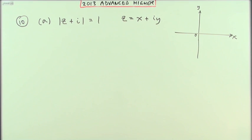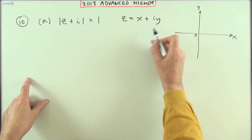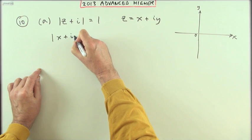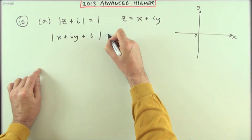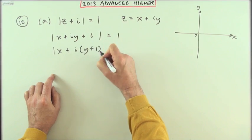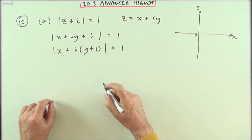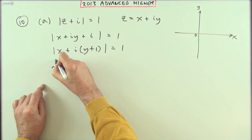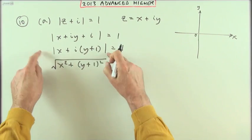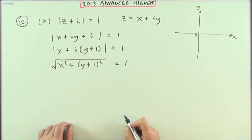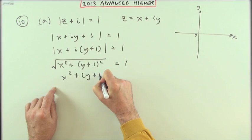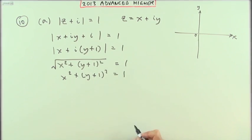Let's get that algebraically. If you let z equal x plus iy and substitute it in, I've got x plus iy plus another i. That should equal one, so x plus i times (y+1) should equal one. The modulus means the square root of the square of those, so the square root of x squared plus (y+1) squared equals one. Squaring both sides, that equals one.